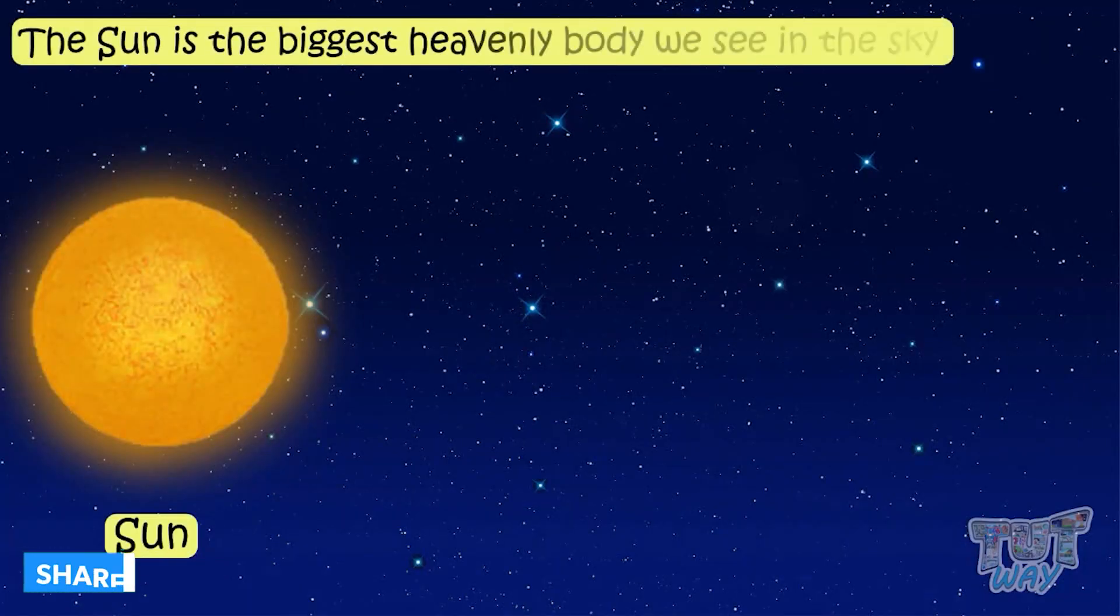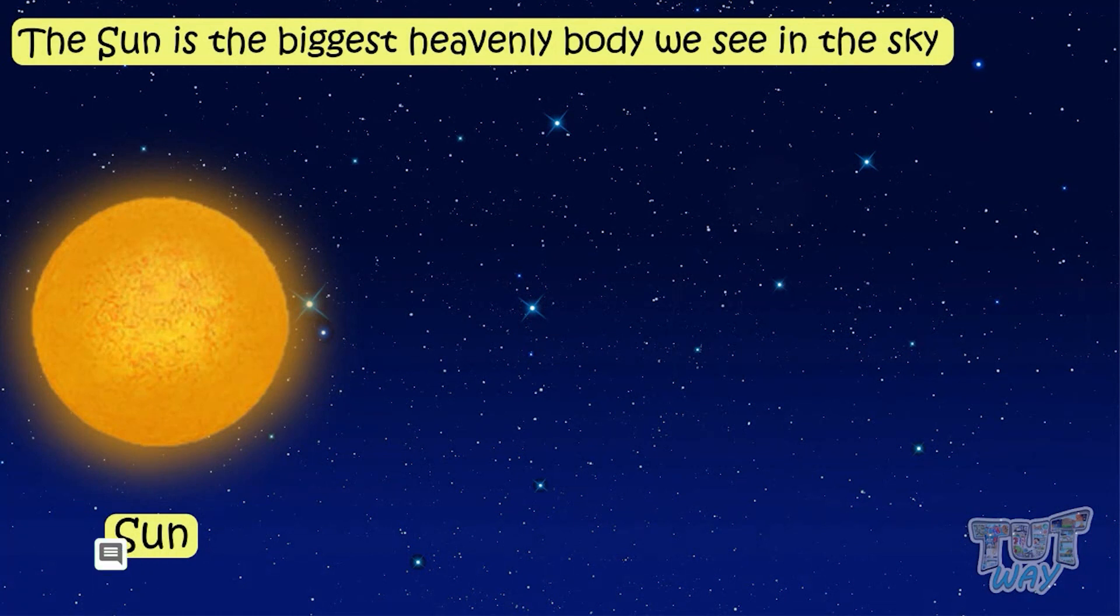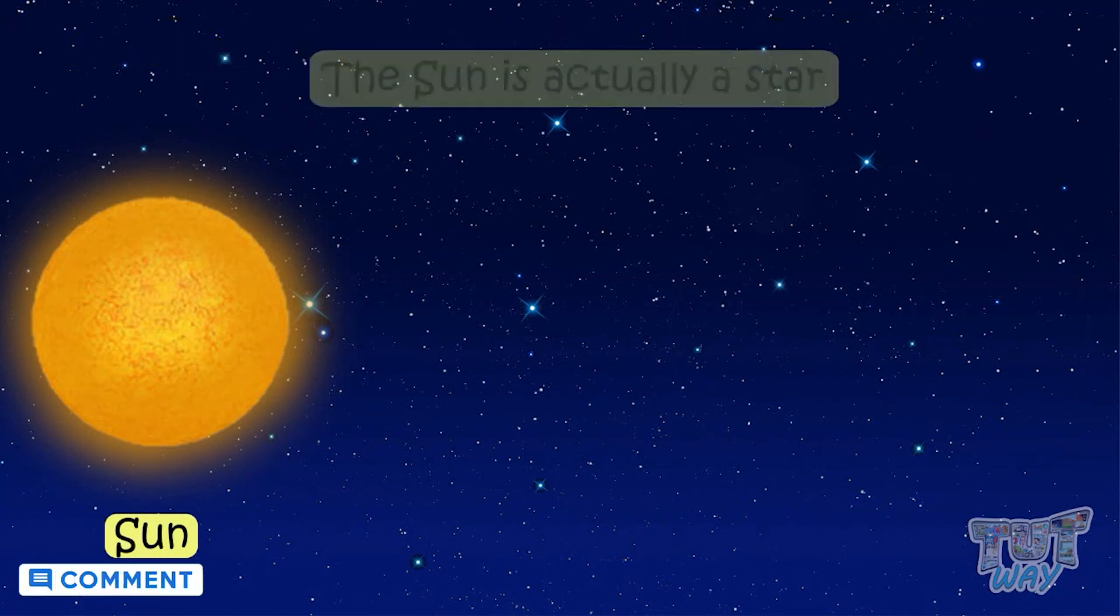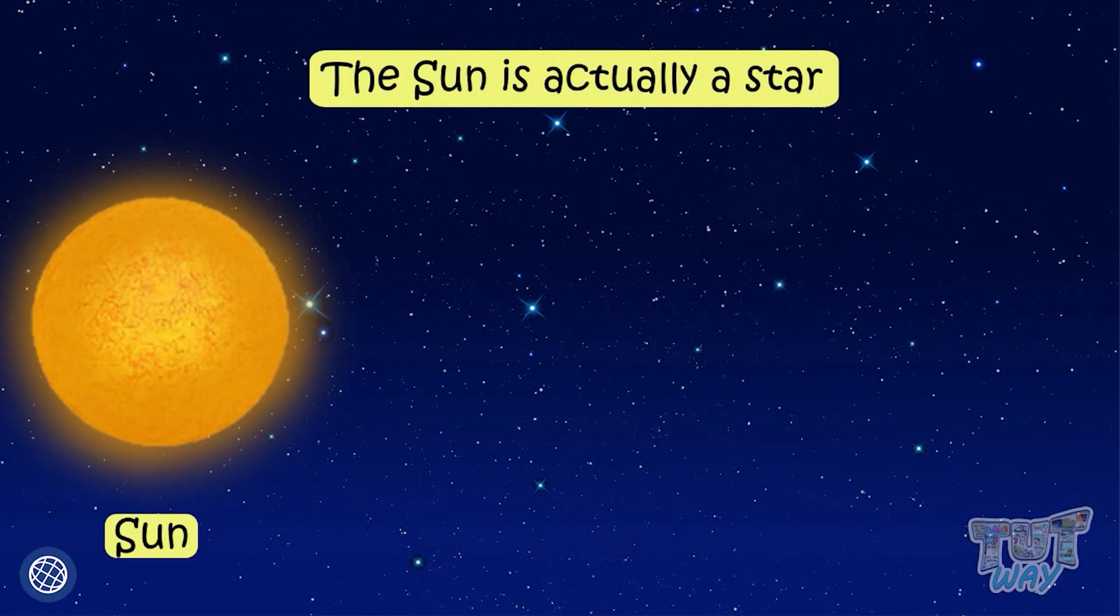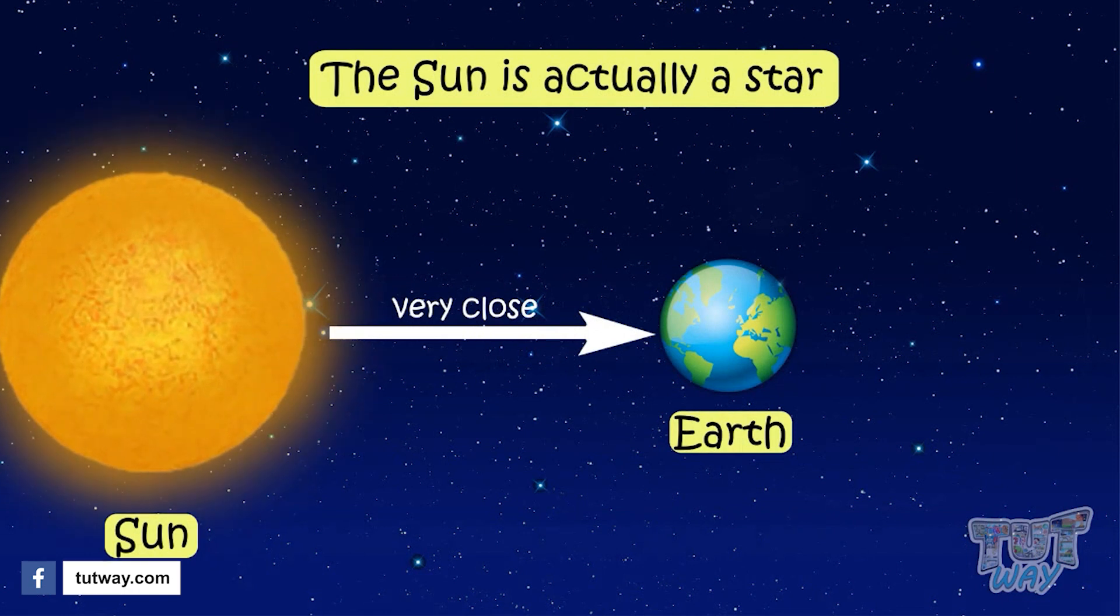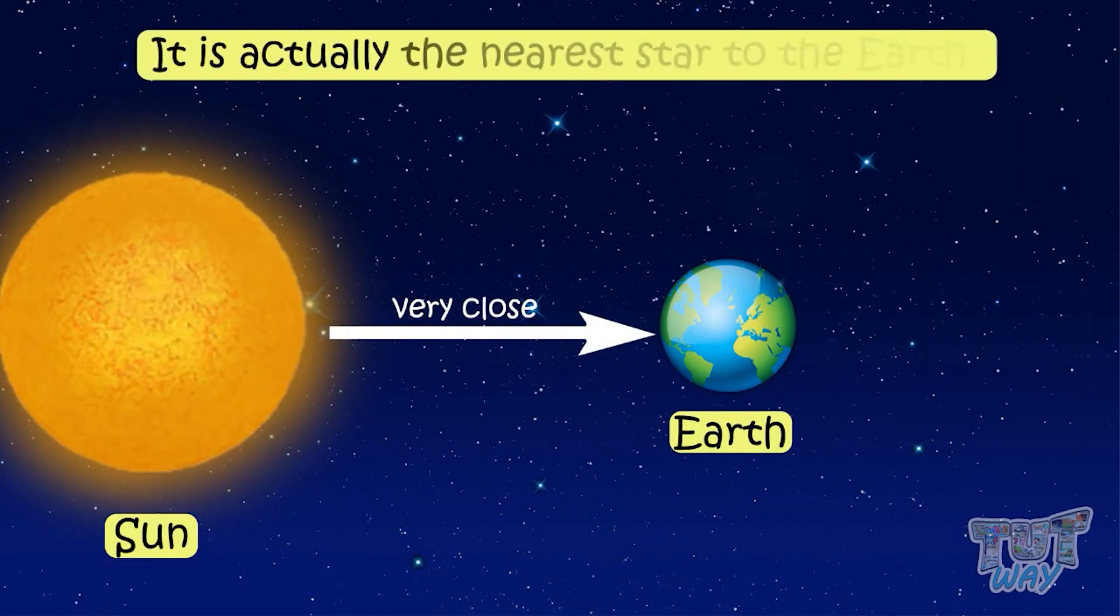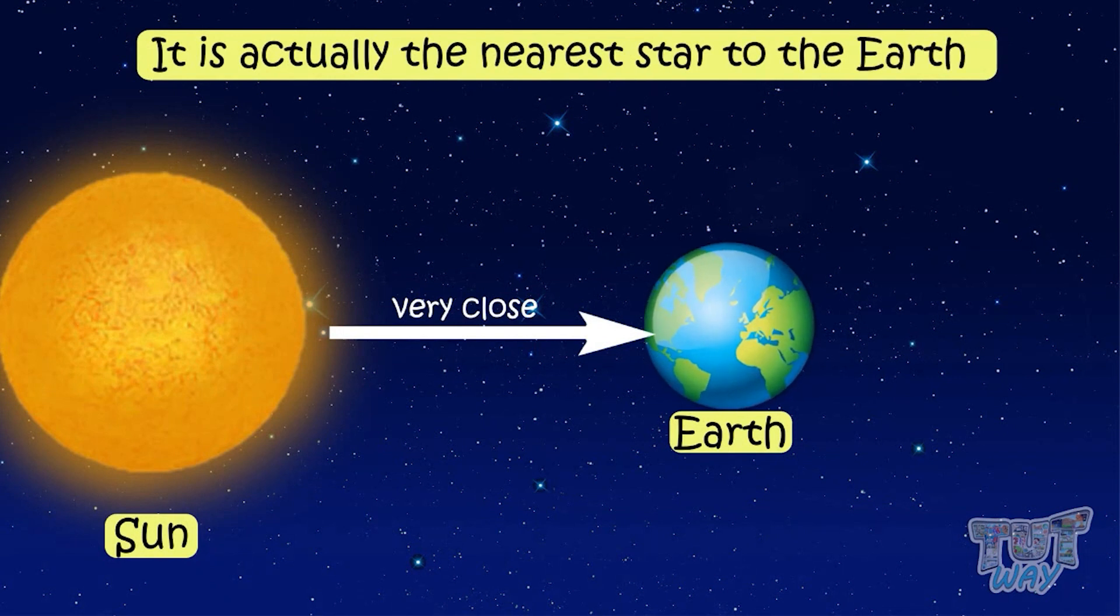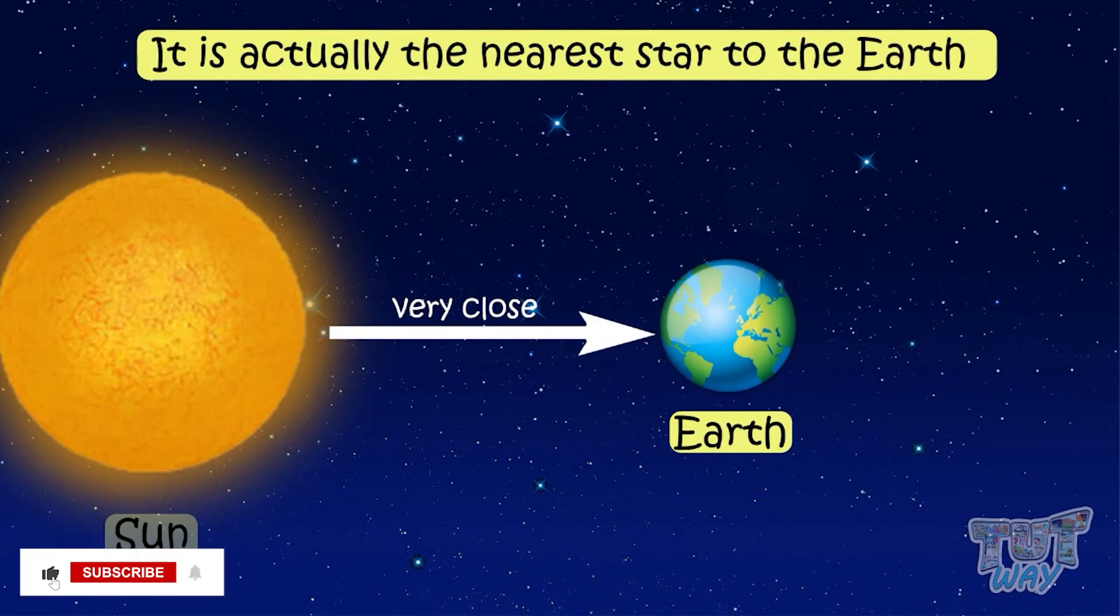The Sun is the biggest heavenly body we see in our sky. The Sun is actually a star but it's very close to Earth as compared to stars we see at night. So it seems so much bigger than the stars. It is actually the nearest star to Earth and we call it Sun.